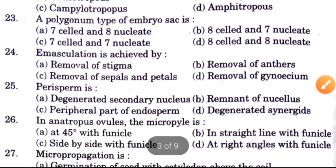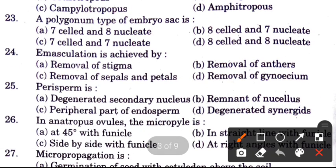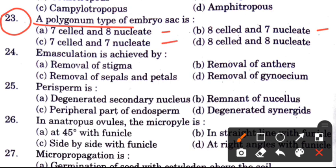Question 23: A polygonum type of embryo sac is — options are 7 cells 8 nucleate, 8 cells 7 nucleate, 7 cells 7 nucleate, or 8 cells 8 nucleate. The answer is A, 7 cells and 8 nucleate.